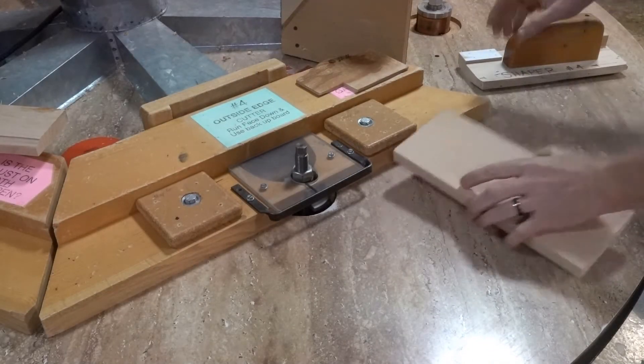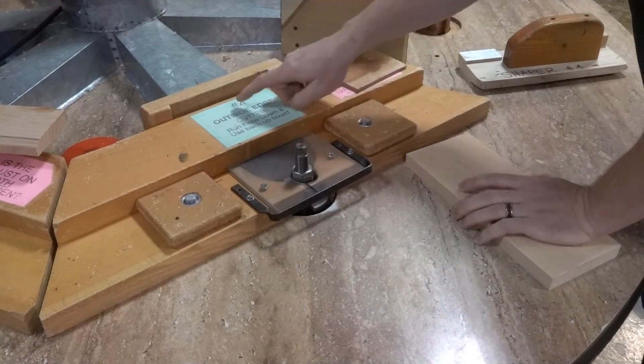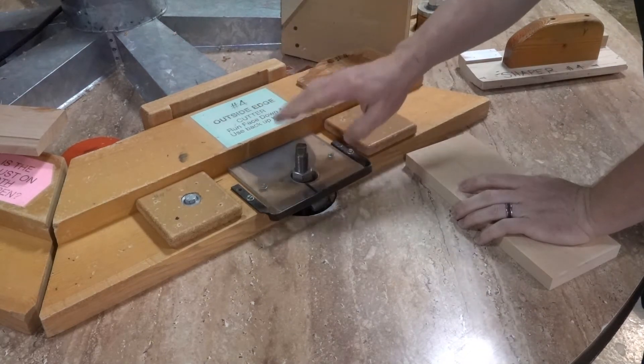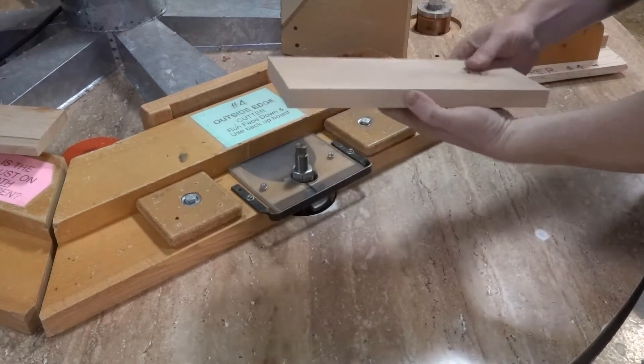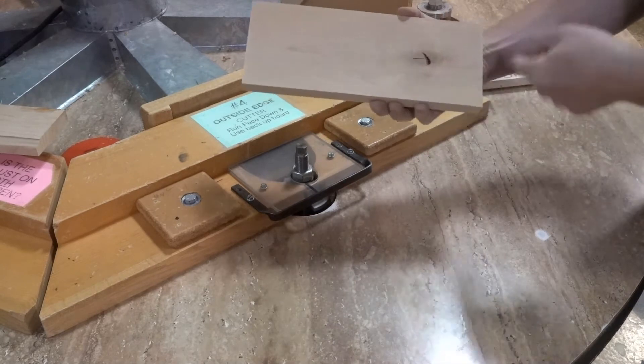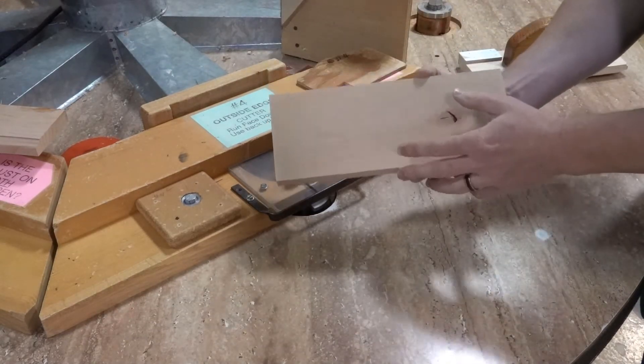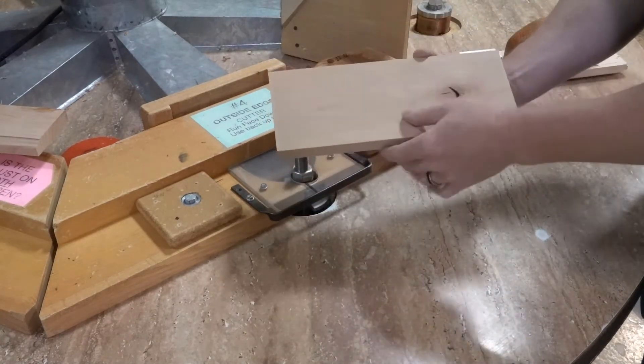Now we've come to the shaper table. For the shapers, we're going to focus on just shaper number four. This is the decorative edge bit. We're going to use this board and put a nice decorative edge all the way around it. It'll look like a plaque or a drawer front or something nice that we'll be able to use later.